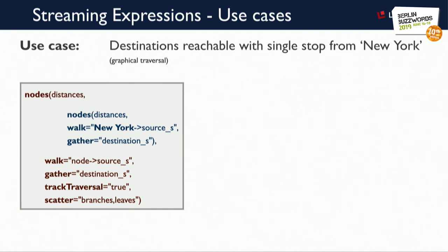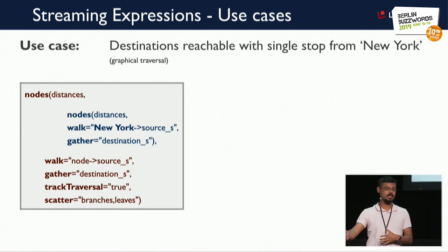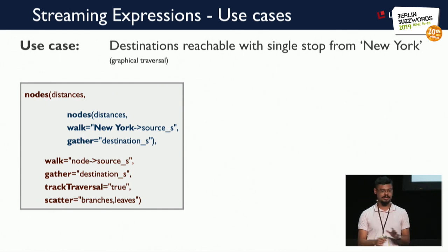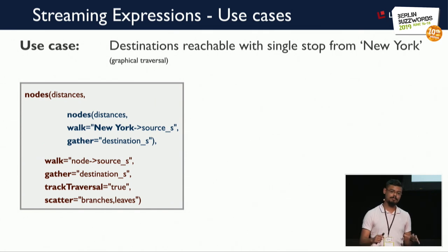Now let's discuss some real-life use cases. For the first use case, we have information about certain flights — their source city and destination city. We want to determine all destinations reachable from New York with a single stop, a single layover. With streaming expressions, we would like to visualize the data as a graph, putting New York at the root node and doing a breadth-first search traversal.